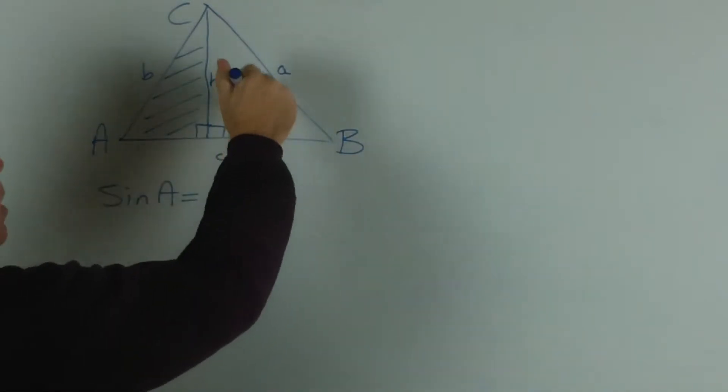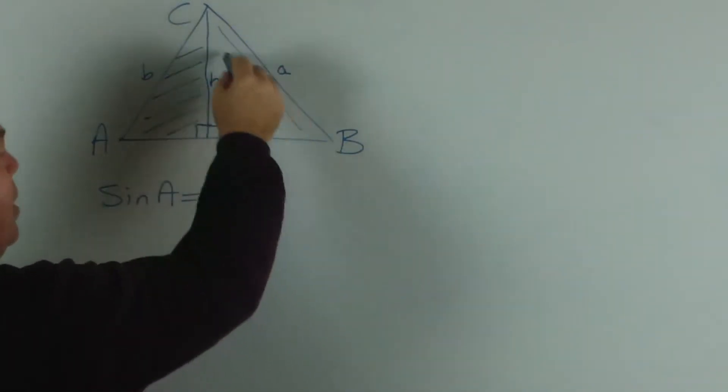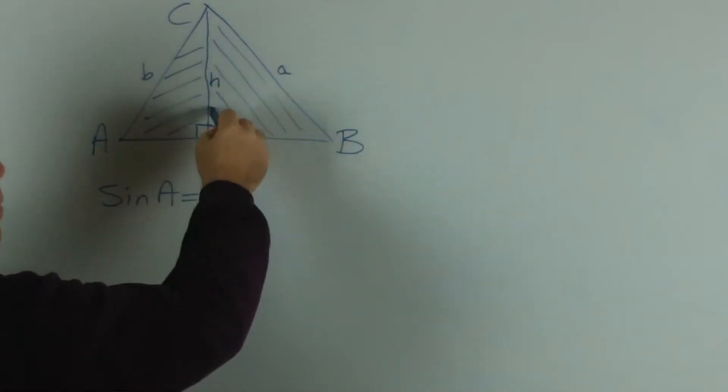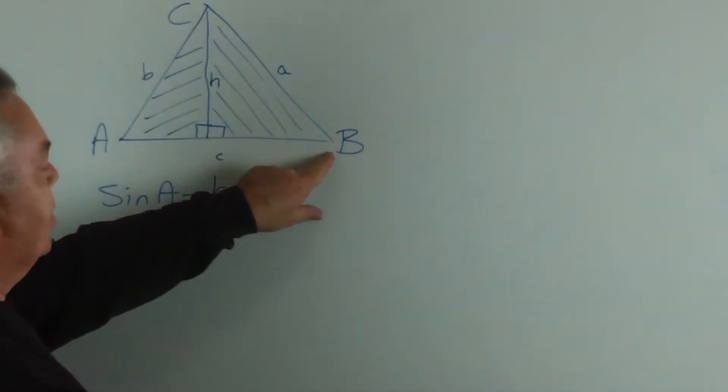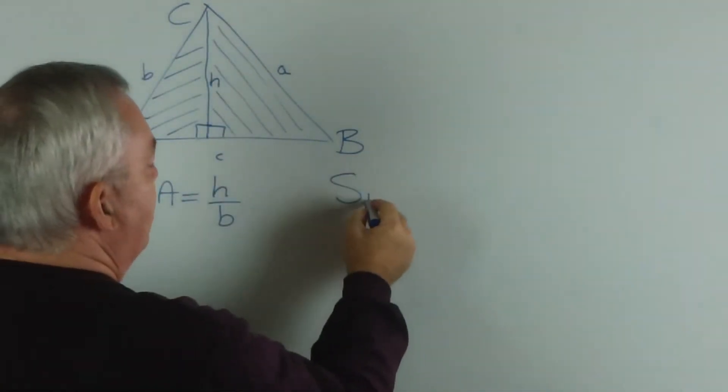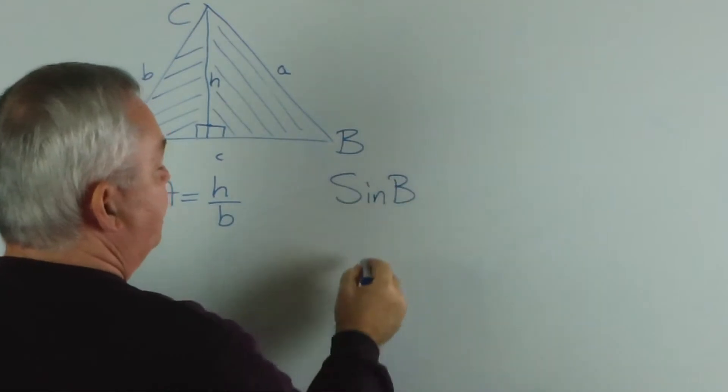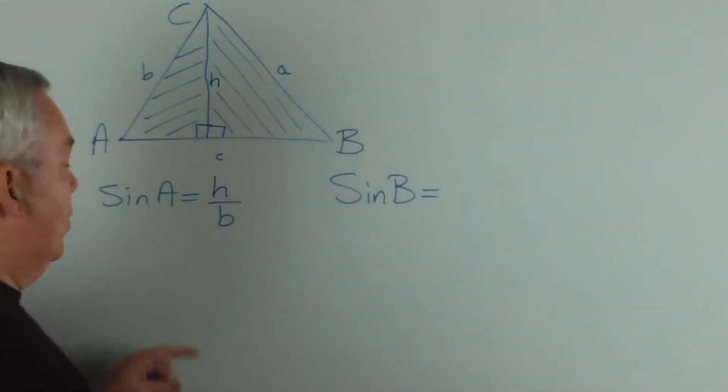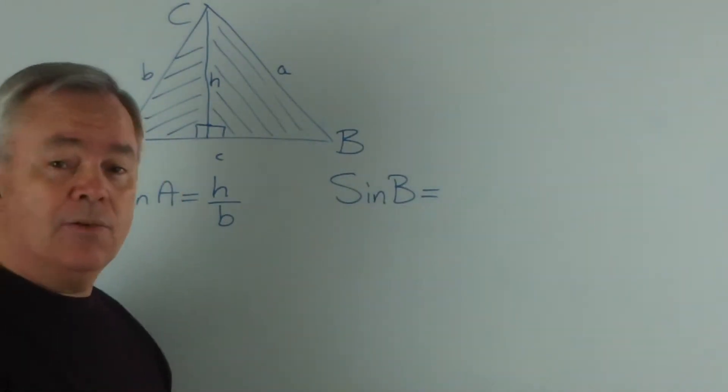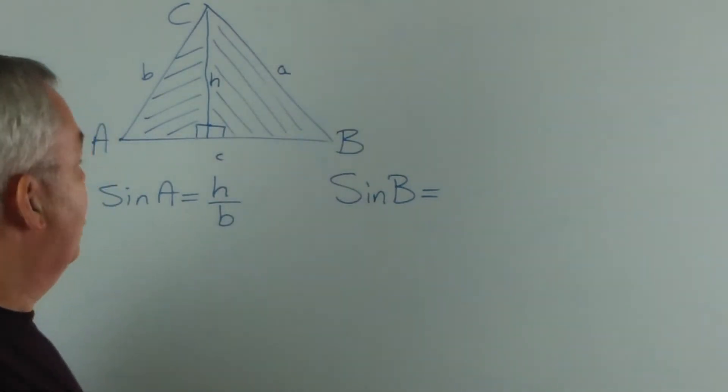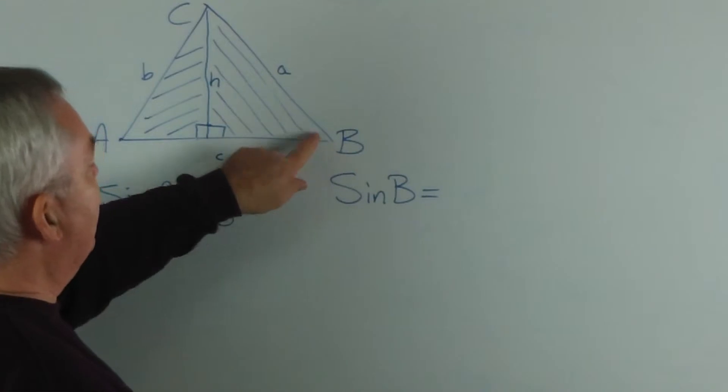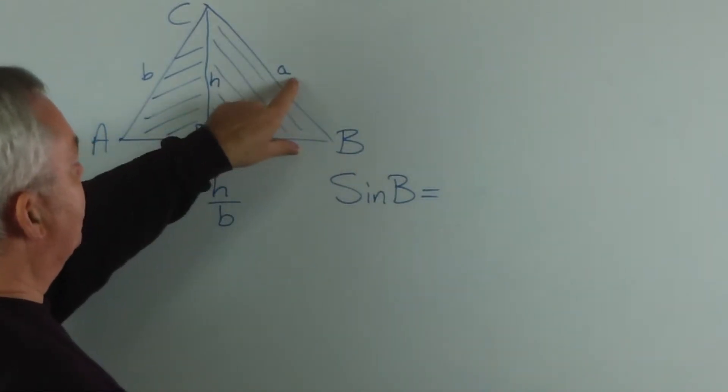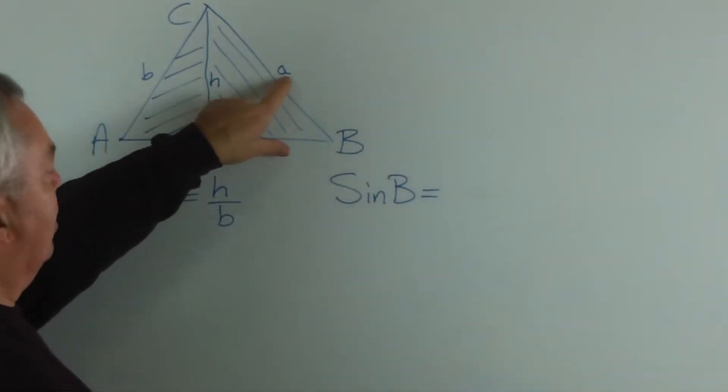In this triangle here, it's also a right angle triangle, this little one. And what is sine B? By the way, I'm looking for the sines of angles because it is the sine rule that I'm trying to prove or derive. Sine B is opposite over hypotenuse, which in this triangle is h over a.